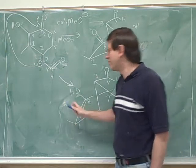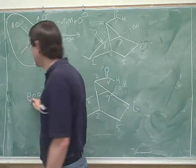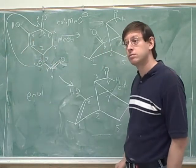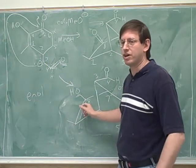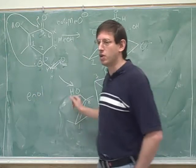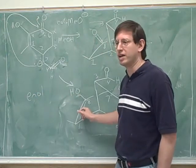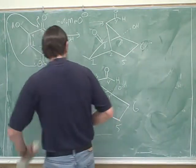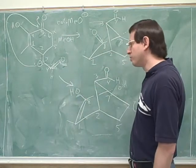So here's the enol. That's a very logical name, right? Because what does ene stand for? The double bond. Double bond, like an alkene. And the ol stands for the alcohol. So an enol is just an alcohol on a double bond. Okay, so this is an enol, alcohol on a double bond.